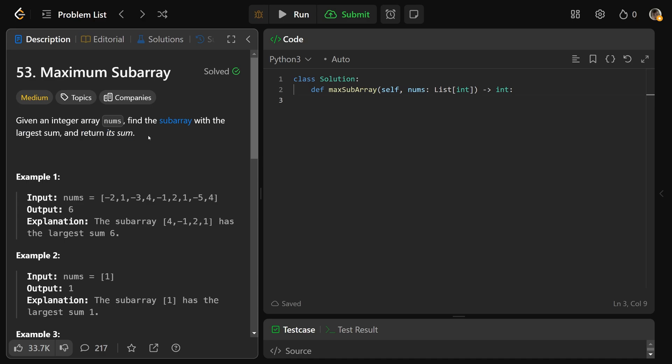You don't need to return the actual subarray. If we're given this array here, you can pick out this piece right here. You'll have a 4, negative 1 is 3, plus 2 is 5, plus 1 is 6. That turns out to be the maximum subarray, and you just return that sum.